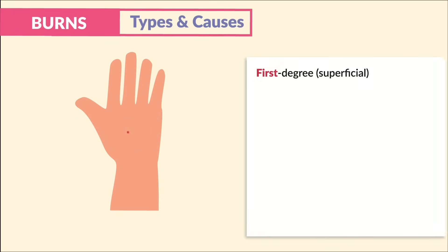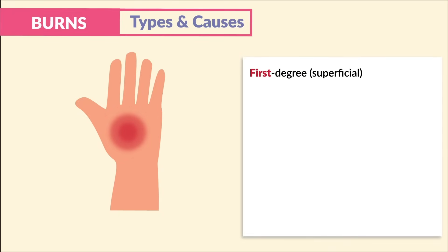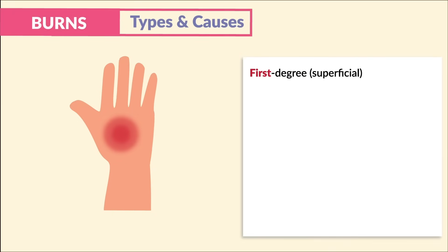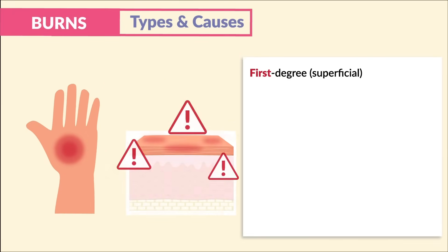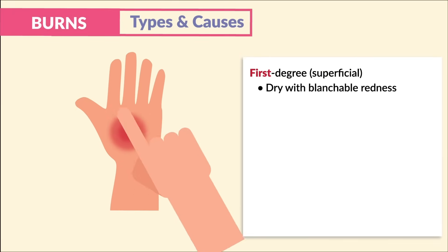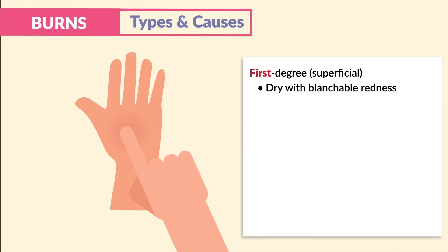In first degree or superficial burns, we have damage to the epidermis, the top layer. We see dry with blanchable redness, meaning that when you press on the wound, the redness goes away.